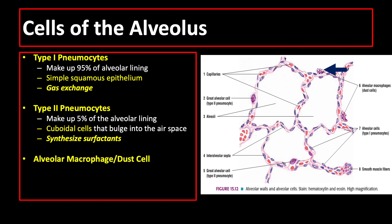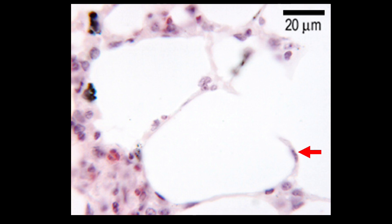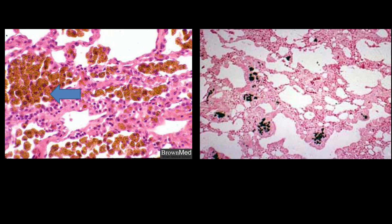The third cell type is alveolar macrophages, also called dust cells, which are resident macrophages that may contain carbon or dust particles. Macrophages with engulfed hemosiderin are called heart failure cells, found in congestive heart failure. Macrophages with engulfed carbon particles are typically found in patients living in polluted areas.